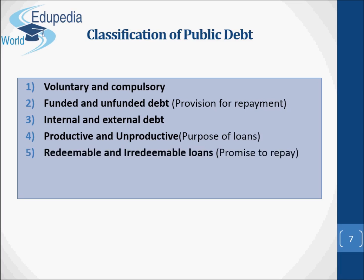Fifth, redeemable and irredeemable loans, based on the promise to repay. Redeemable debts refers to the loan which the government promises to pay off at some future date — principal plus interest. Irredeemable debts are those where the principal amount of loans is never returned by the government, but it pays interest regularly.